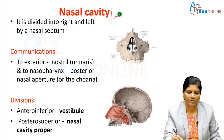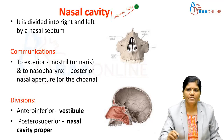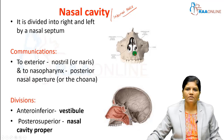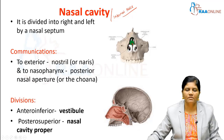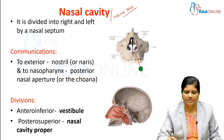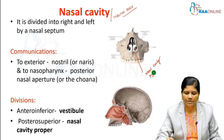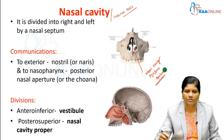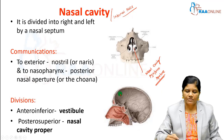The internal nose is otherwise known as nasal cavity. This is the bony outline of the nasal cavity. It is divided into two halves — not equal halves but asymmetrical halves — by the nasal septum, which is also made up of bones as well as cartilages. In the skull it looks like a piriform shape, so it is otherwise known as the piriform aperture. This is the sagittal section of the skull showing the communications of the nasal cavity.